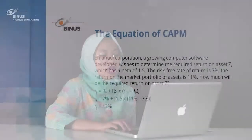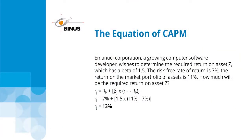Here is an example of how to calculate CAPM. Emanuel Corporation, a growing computer software developer, wishes to determine the required return on asset Z, which has a beta of 1.5. The risk-free rate of return is 7% and the return on the market portfolio of assets is 11%. Substituting into the CAPM equation, the required return on asset Z is 13%.